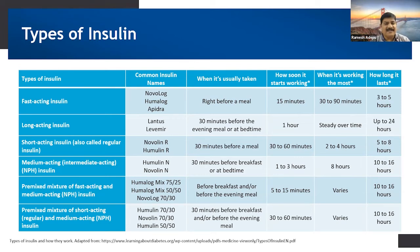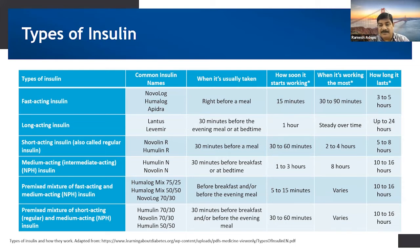Medium-acting insulins, also called intermediate-acting insulins — like NPH, Humulin-N, or Novolin-N — need to be taken 30 minutes before breakfast or at bedtime. They start acting after 1 to 3 hours and remain effective for up to 10 to 16 hours.